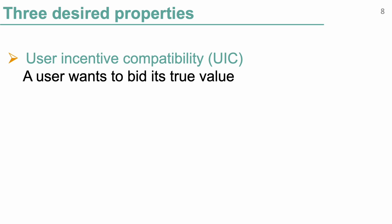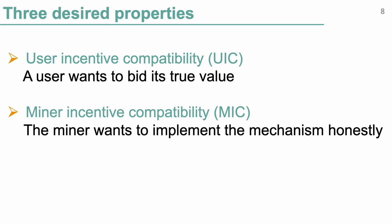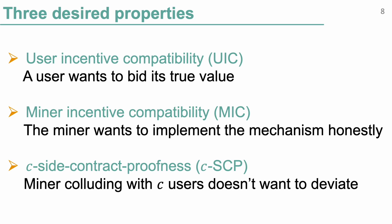The first property is User Incentive Compatibility (UIC): we want a user to be incentivized to bid its true value, representing its maximum willingness to pay. This is the same notion as in classical mechanism design. In addition, we also want Miner Incentive Compatibility (MIC): we want to design a mechanism such that the miner is incentivized to implement the mechanism honestly. Last but not least, we also want a third property called Side Contract Proofness. On blockchain it is very easy for players to form binding side contracts, and in particular they can rely on smart contracts to split off their joint gains.